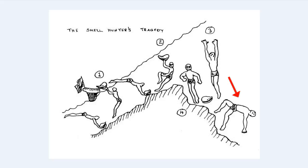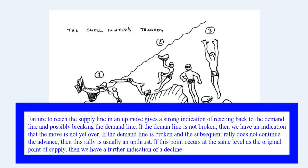This story illustrates a market principle that you can see in various charts. Hopefully this little story will help you remember the principles involved. Let's now put this into our own technical jargon. Failure to reach the supply line in an up move gives a strong indication of reacting back to the demand line, and possibly breaking the demand line.